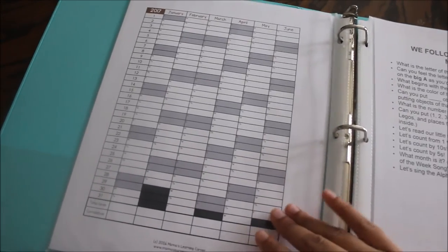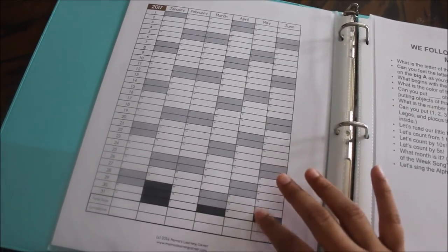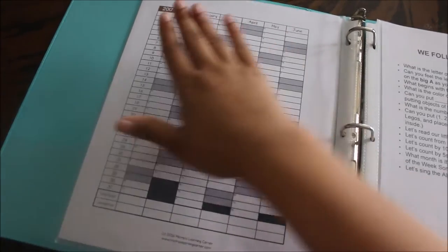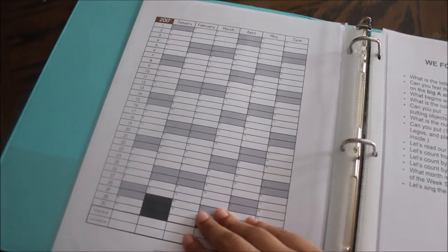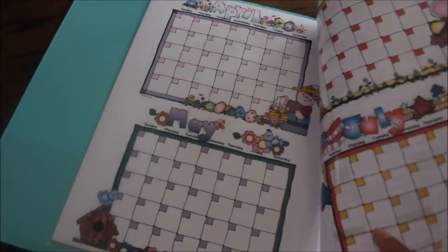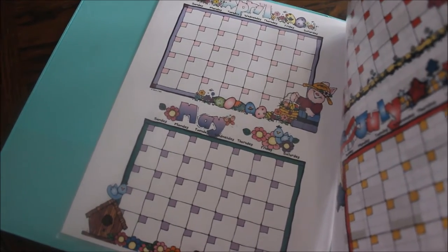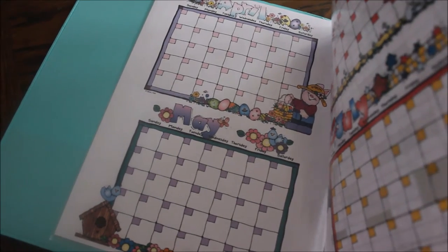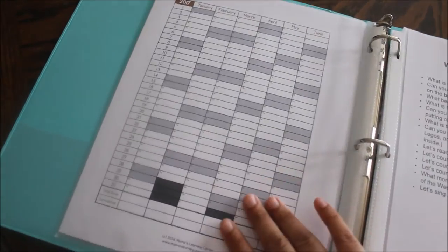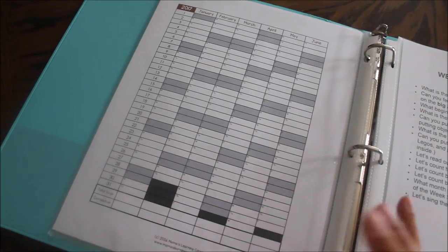And then after that over here, I have 2017 January through June, which totally disregard January, February. And what I'm going to do with these is figure out what works for me as far as keeping track of the days that we do school, because if Sawyer's not feeling it one day, I'm not going to pressure him to do it. So just for my records to keep track of what days we do school.